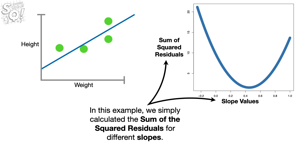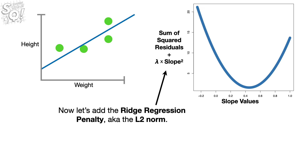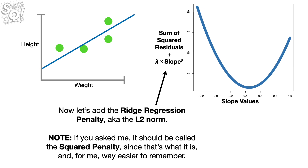In this example, we simply calculated the sum of the squared residuals for different slopes. Now let's add the ridge regression penalty, a.k.a. the L2 norm. If you asked me, it should be called the squared penalty, since that's what it is — and way easier to remember.